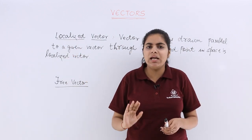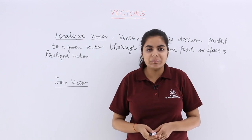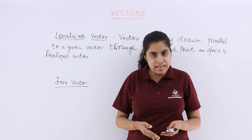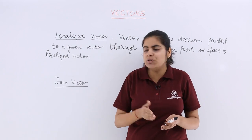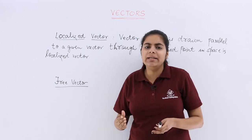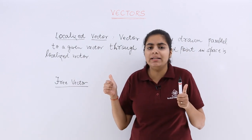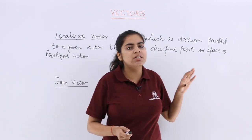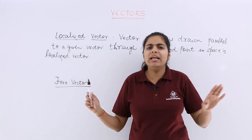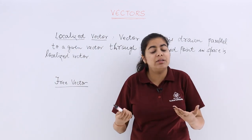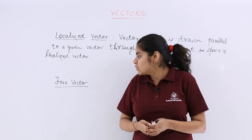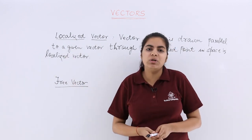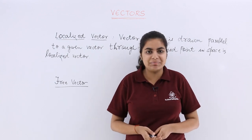A free vector is simply defined as a vector that only depends upon magnitude and direction, and is independent of the point in space. Since a localized vector was tied to a specific point in space, a vector independent of that point is free — and so it is called a free vector; otherwise it would be called a localized vector.